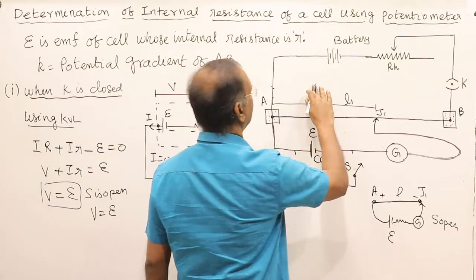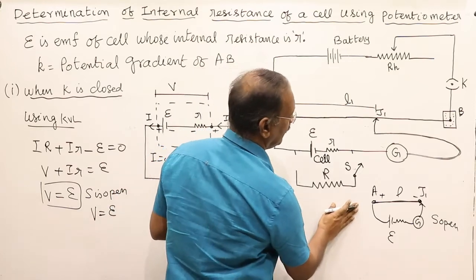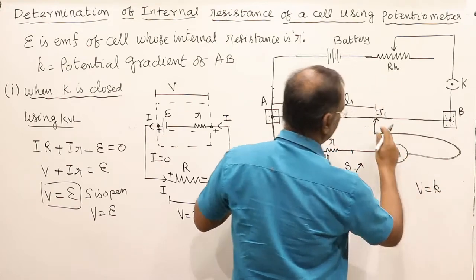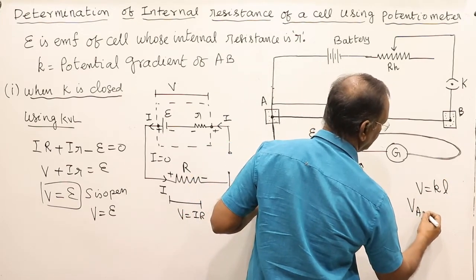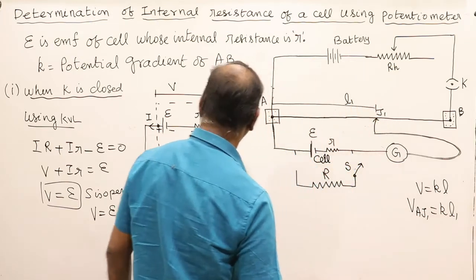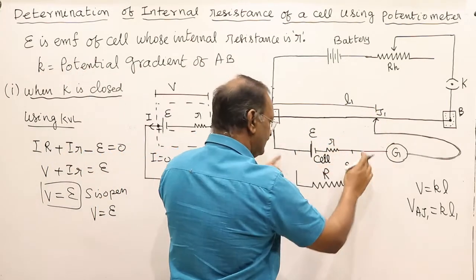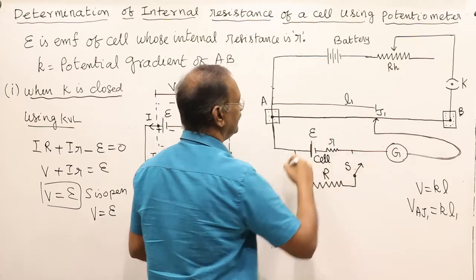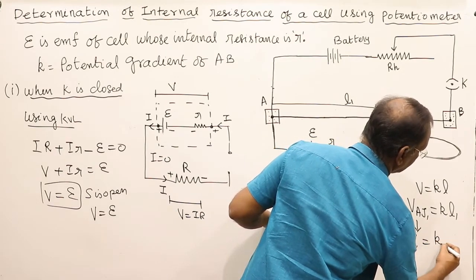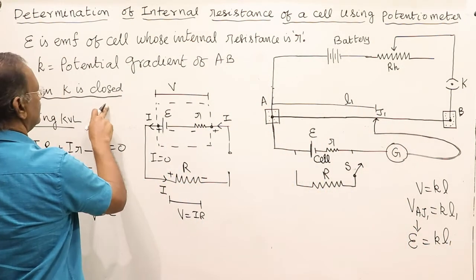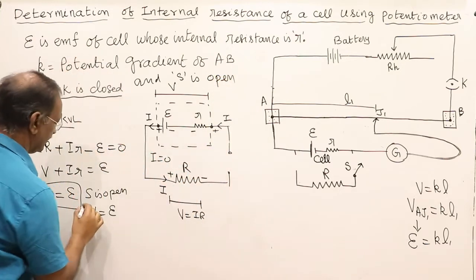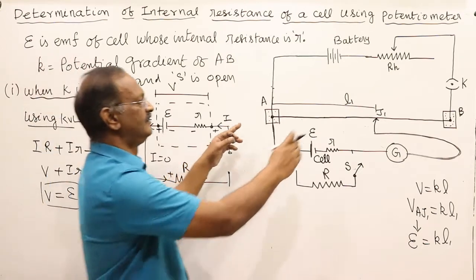By the principle of the potentiometer, the potential difference between A and J1 equals the potential gradient K multiplied by length L1. V(AJ1) equals K×L1, which equals the EMF of the cell. So we write: EMF = K×L1. This is the first equation, valid when K is closed and S is open — the potential difference across the wire equals the EMF of the battery.